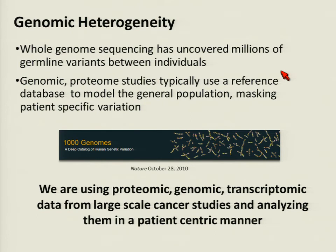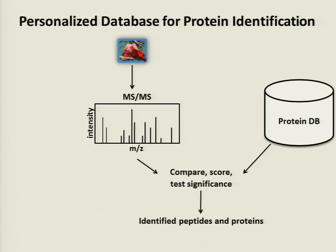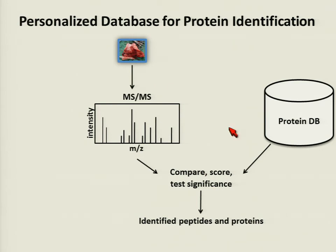We are using proteomic, genomic, and transcriptomic data from large-scale cancer studies and analyzing them in a patient-centric manner to capture tumor- and patient-specific variation. After taking samples, digesting, and performing LC-MS/MS, we identify peptides within the spectra by comparing to a protein database. Typically a reference protein database does a good job identifying many peptides, but in tumor samples with many variants, if those variants aren't in the database, we cannot identify them from the spectra.